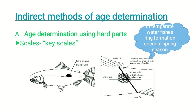Indirect methods of age determination begin with age determination using hard parts. First, we discuss scales. To identify the key scale, we have to collect scales from four or five parts of the fish. This is what is meant by key scale — collecting scales from multiple regions of the fish body.